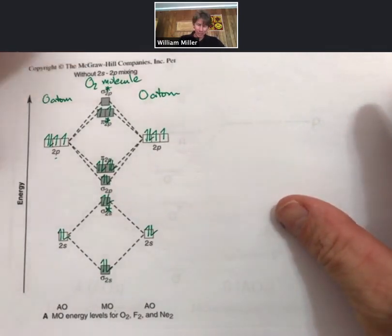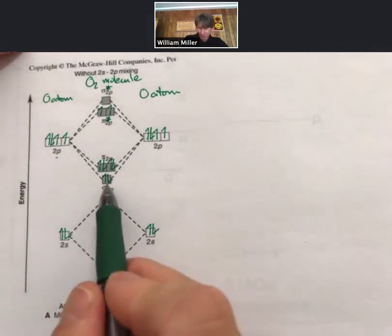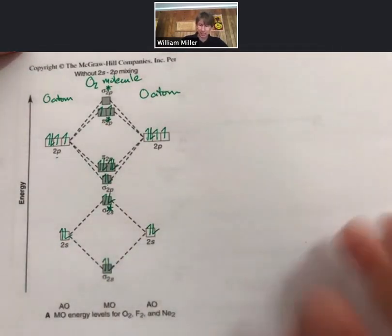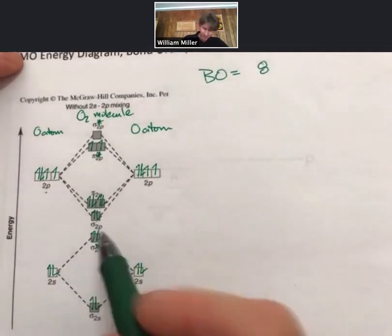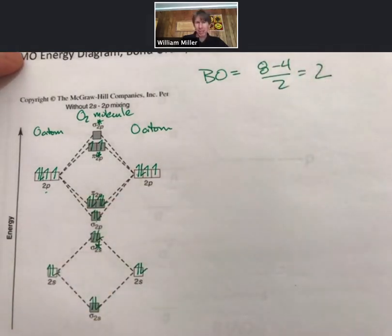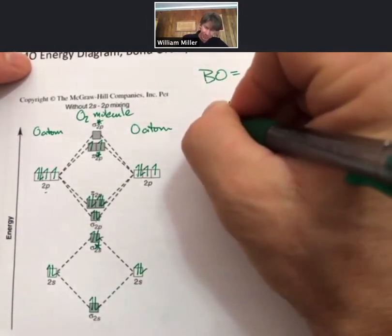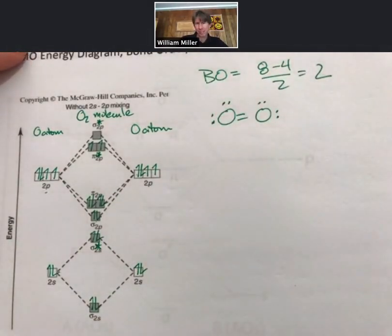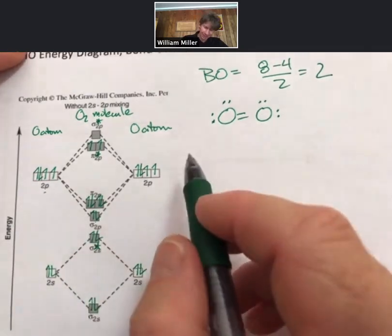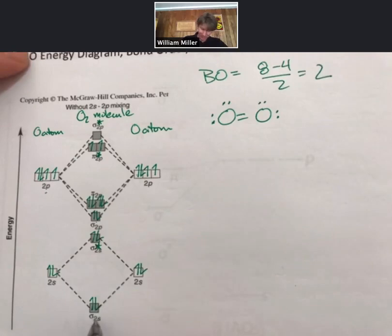Of the six 2p orbitals, three are bonding, three are antibonding. Let's put the electrons in: one, two, three, four down here. Now we have eight more: one, two, three, four. Notice we're putting one electron in each before we pair them, still a thing. Five, six, seven, eight.